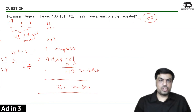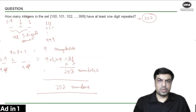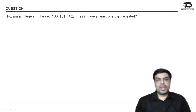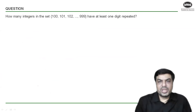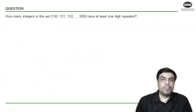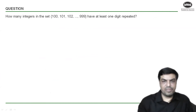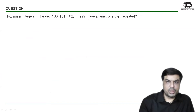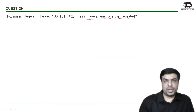Let's look at a shorter way of solving the same question. Whenever you have to list multiple cases, you can always use the complement. The event here is that the number has at least one digit repeated. The complement of this is: no digits repeated.